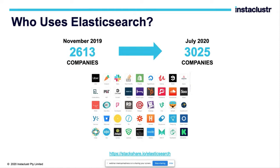This slide is from a website called Stackshare, which shows which companies are using Elasticsearch and how. In November 2019, there were 2,613 companies using it. By July, that number grew to 3,025 companies using Elasticsearch for various use cases. The usage is on the rise — it's not declining.